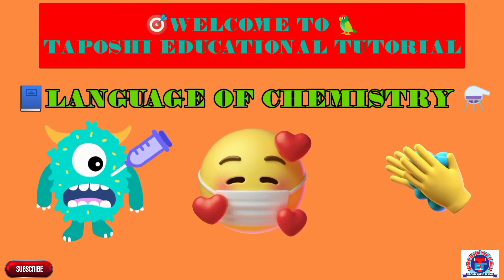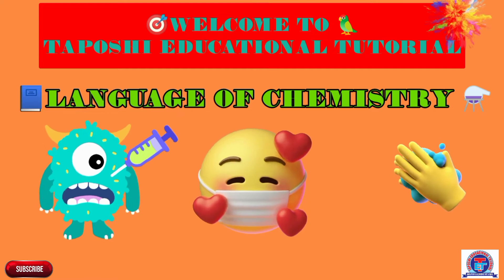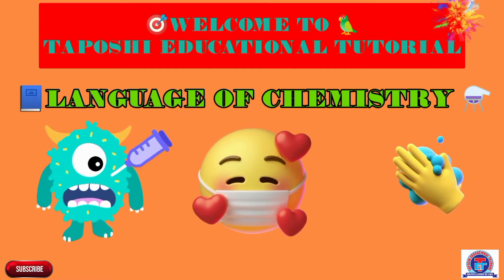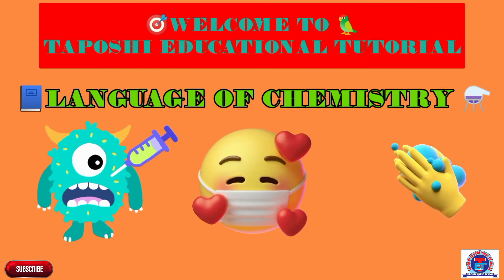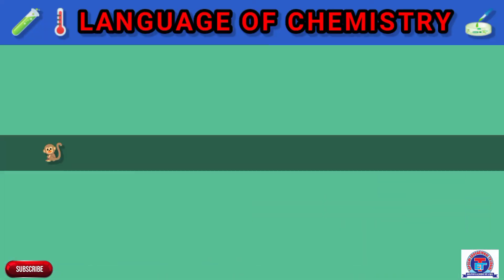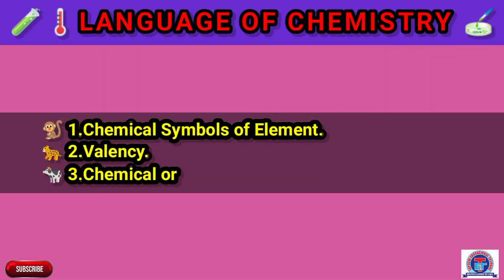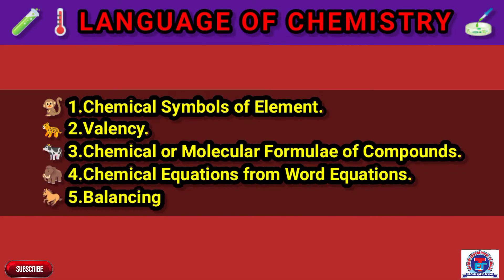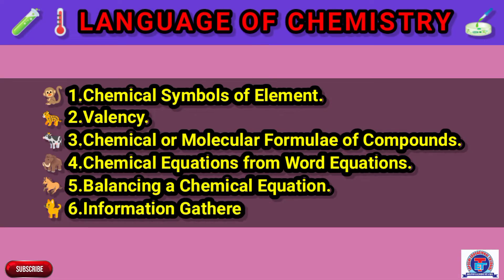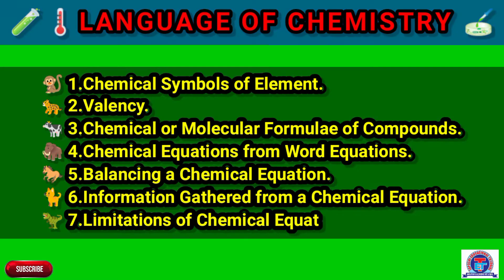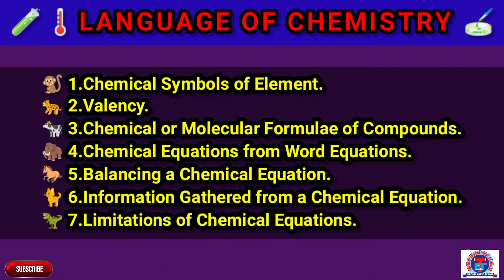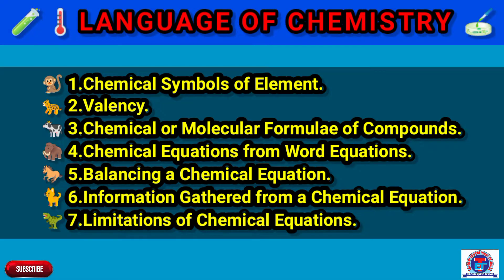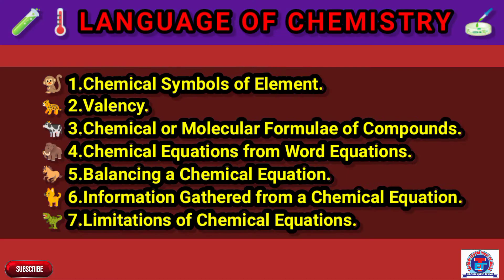Good morning, my dear students. Welcome to Taboci Educational Tutorial. Here I bring another chapter — the Language of Chemistry. In this chapter you will be able to learn: number one, chemical symbol of element; number two, valency; number three, chemical or molecular formula of compounds; number four, chemical equation from word equation; number five, balancing a chemical equation; number six, information gathered from a chemical equation; and number seven, limitation of chemical equation.